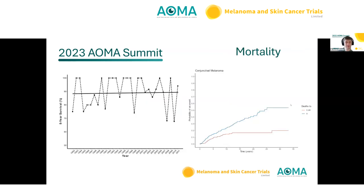Moving on to mortality: over the 33 years this data spanned, the average five-year survival rate was 90% — higher than the European figure of about 80%. The cumulative probability of dying from conjunctival melanoma shows that the probability of dying from other causes after being diagnosed with conjunctival melanoma is actually higher, indicating it is generally quite a manageable cancer.